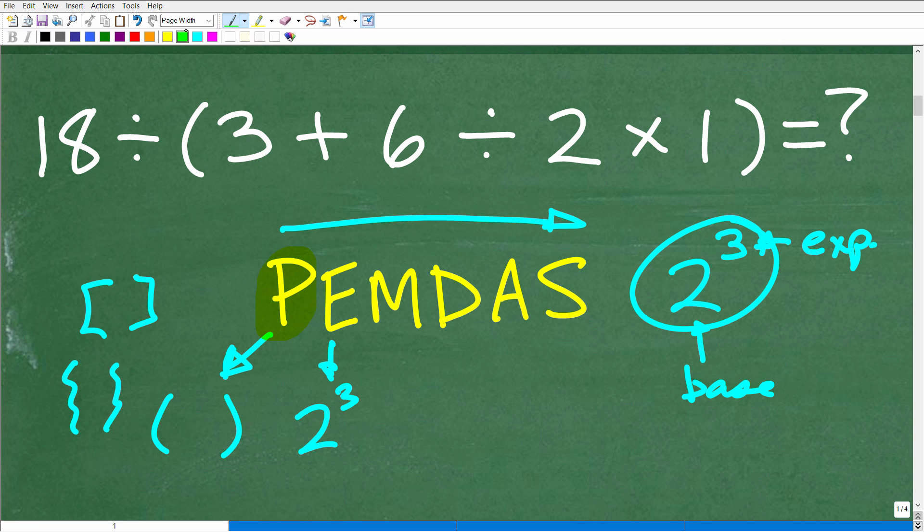The next thing, you might be thinking, what does M and D and A and S stand for? You're probably thinking, this is multiplication, division, addition, and subtraction. And you would be correct. That's what the M, D, A, and S stand for.